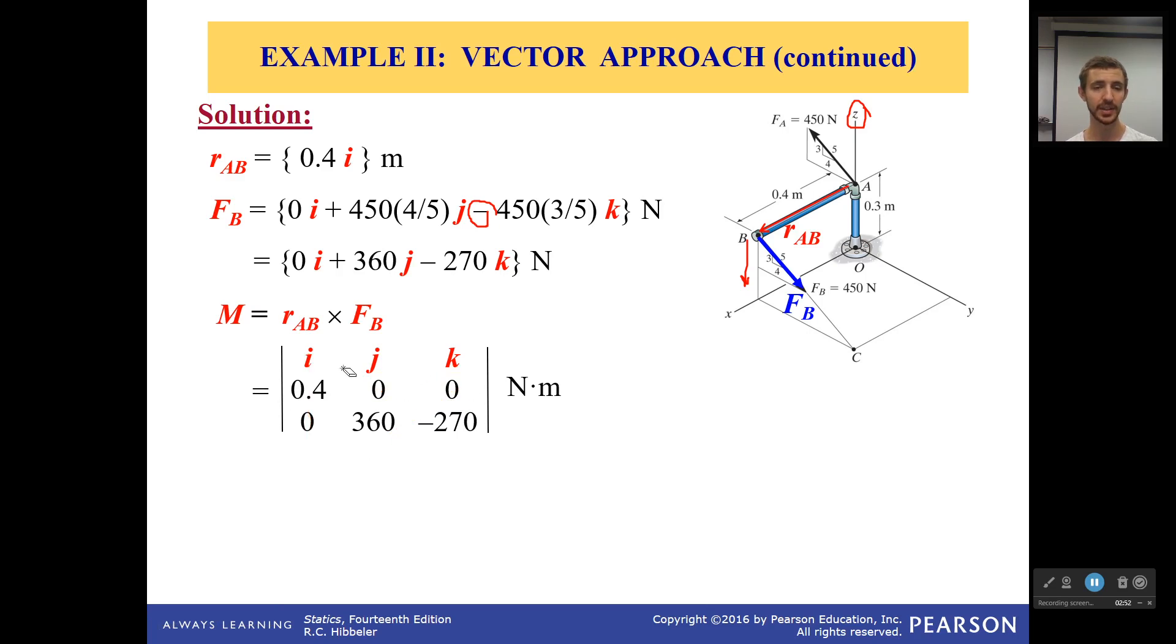Then I do it all again, but this time I take the cross product right here. This one times this one. This one times this one. So that's going to have a component. And eventually I'll do the same thing for the k. These two together, and then these two together. So there will be a j and k component to this, but no i component.